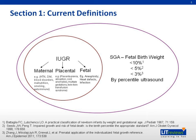SGA is defined as a fetal birth weight of less than 10% of the total population, confirmed by ultrasound. Other sources have advocated the use of 5% or 3%, but it is basically an arbitrary cutoff point at the moment. Whereas IUGR — intrauterine growth restriction — is basically any in utero condition which restricts the growth of the fetus to its full predicted potential.